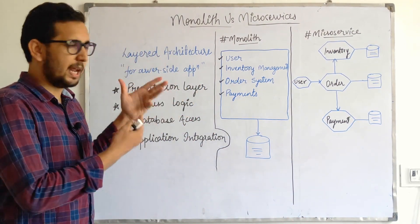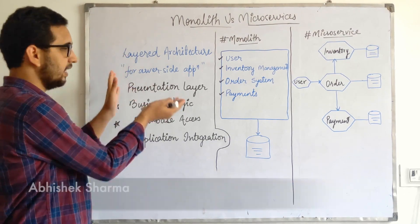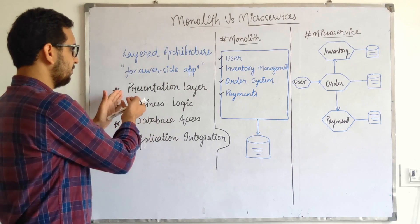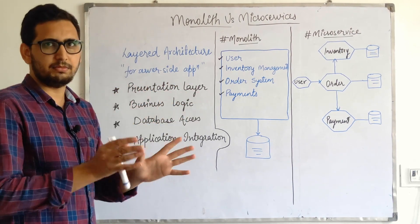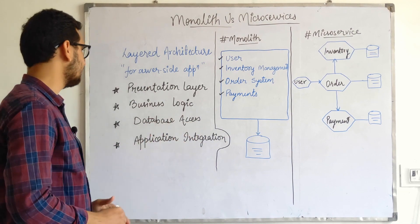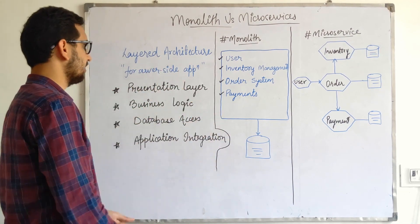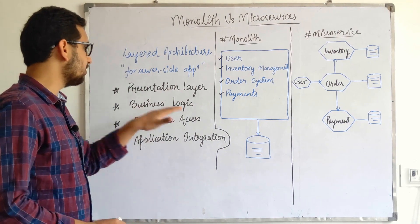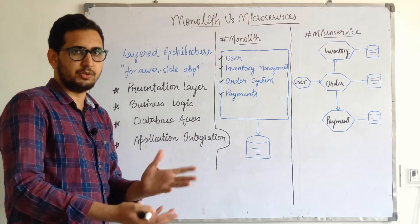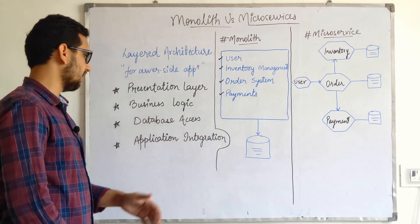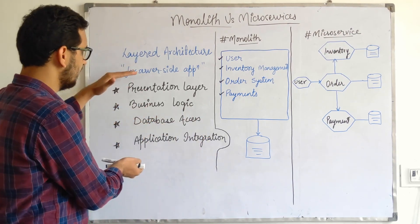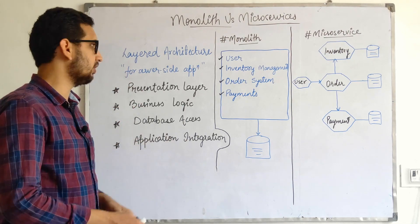First, let me take a step back. All server-side applications, whether for a mobile app or a website, have some sort of layered architecture. We have a presentation layer — something the user can see, like HTML, CSS, or a JSON response. Then there's the core business logic, database access for saving user state and data, and application integration if you're interacting with other applications.